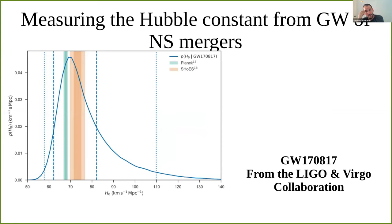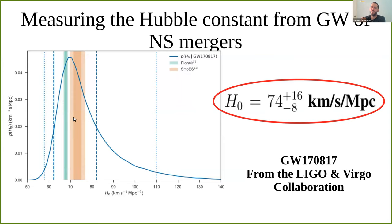If we go to gravitational waves alone, this is what the LIGO-Virgo collaboration gave us as the posterior probability for the Hubble constant. Both the Planck and SH0ES experiments are within the errors, but the errors from gravitational waves alone are really huge. So we need something to reduce these errors. Marius showed how to do it with multiple observations even without electromagnetic counterparts. I want to show how we can do it with only one or two observations but with electromagnetic counterparts.